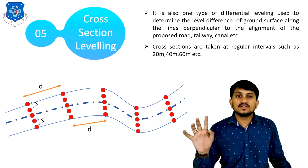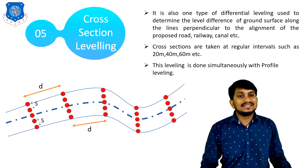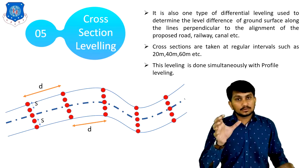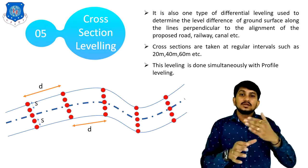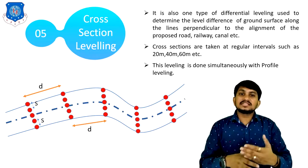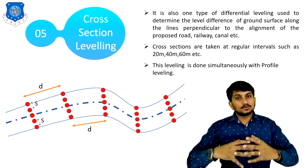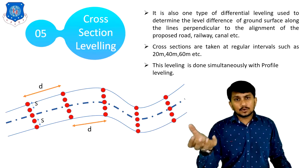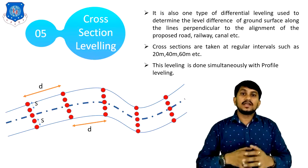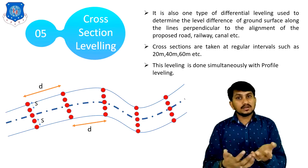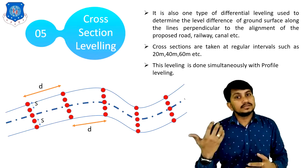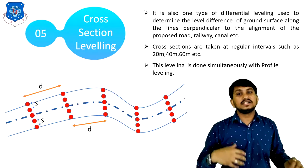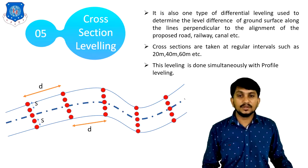Cross-section leveling is also one type of differential leveling used to determine the level difference of the ground surface along lines perpendicular to the alignment of a road, railway, or canal. Cross sections are taken at regular intervals such as 20 meters, 40 meters, 60 meters, etc., with equal spacing throughout. This leveling is done simultaneously with profile leveling to make the profile of the whole road. By using profile leveling and cross-section leveling together, we can calculate the quantities of cutting and filling in earthwork or in construction of the road.